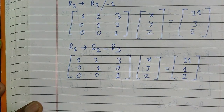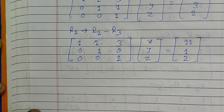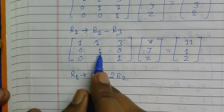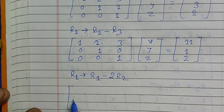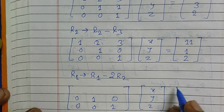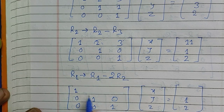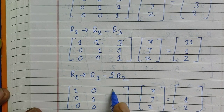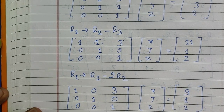Now I need to make the 2 in the second column of R1 equal to zero, and then the 3 in the third column. For the second column, we apply R1 implies R1 minus 2R2. The entries become: 1 minus 2×0 gives 1; 2 minus 2×1 gives 0; 3 minus 2×0 gives 3. Right-hand side: 11 minus 2×1 gives 9. So R1 becomes [1, 0, 3 | 9].